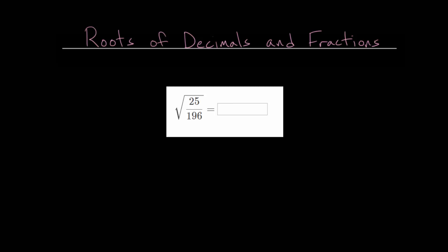In this video I'd like to talk about taking square roots of decimals and fractions. So we have this example problem where we're taking the square root of 25 divided by 196. And remember what a square root is asking us to find. Essentially we're looking for a number that when multiplied by itself gives us whatever is underneath the square root symbol.